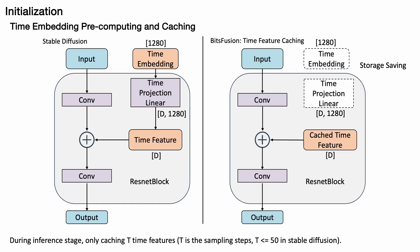During the inference stage, the number of time steps is predefined, typically set at 50. Thus, there is no need to store the extensive time embedding and projection layers, each with d by 1280 parameters. Instead, we can store just the d by 50 time features, significantly reducing storage requirements.